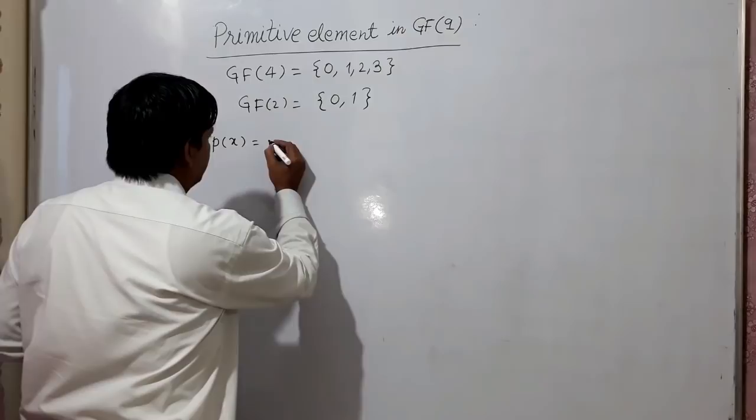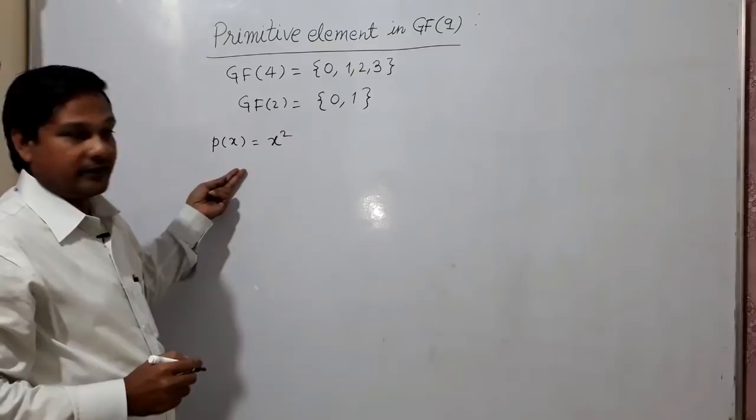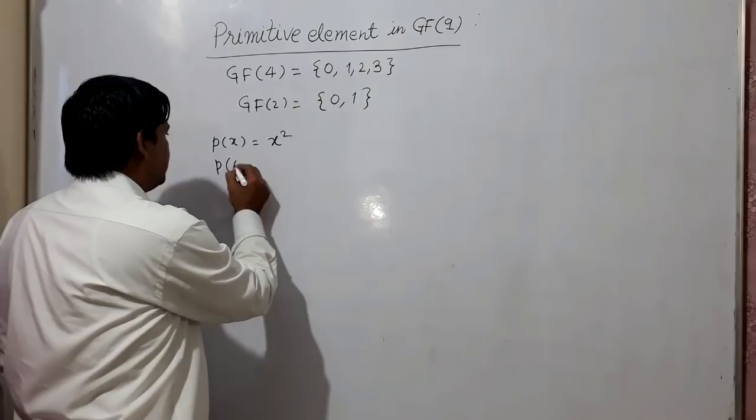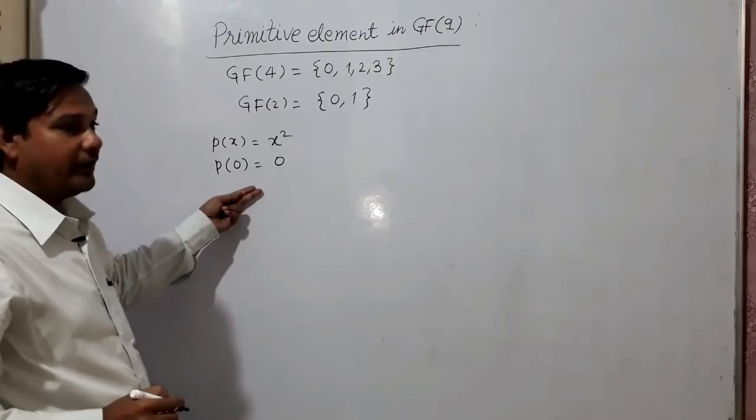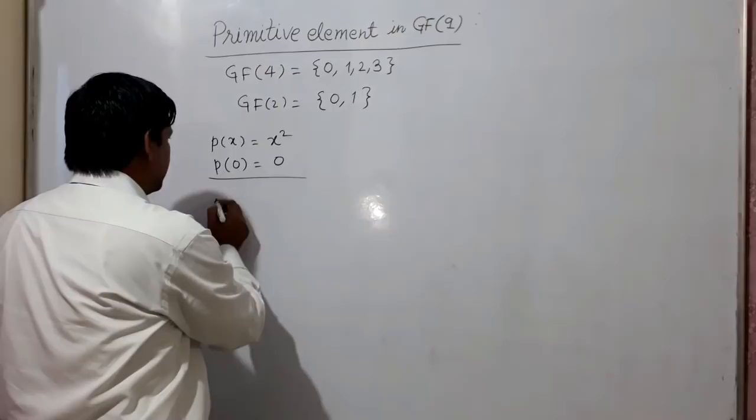I have to take a primitive polynomial of degree 2 in x, so the candidate is x². I check P(0): it comes out to be 0, so 0 is a root. Therefore, I discard x².